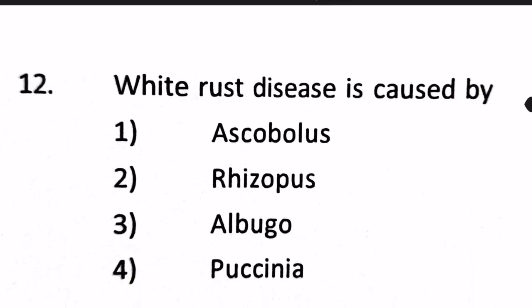Next question: White rust disease is caused by a very specific genus called Albugo — Albugo candida — which belongs to the class Oomycetes, the lower group of fungi. The answer is option three, not Ascobolus or Rhizopus.